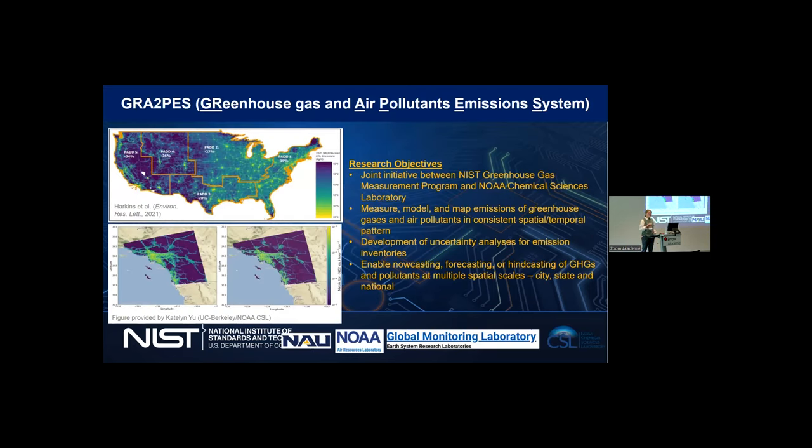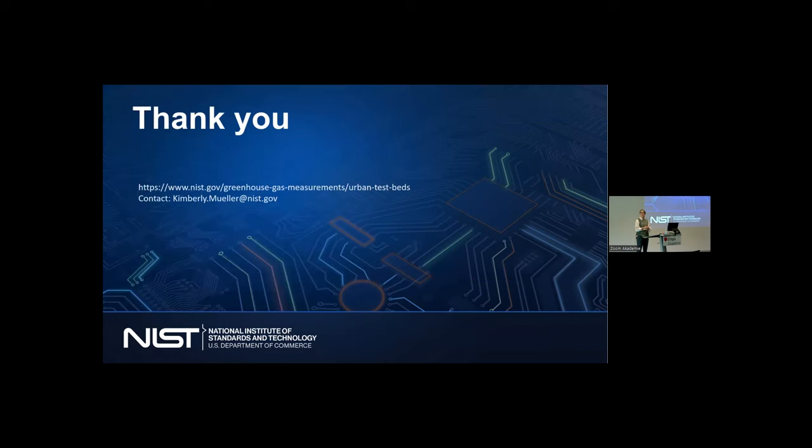Finally, my last slide. Knowing that people need actual information, this is partnered with NOAA and various labs along with Kevin Gurney at NAU to help basically create, measure, model and map emissions of greenhouse gas and air pollution. We're really combining the whole system here because the mechanisms that create greenhouse gases also create air pollution. In a consistent spatial and temporal way, and also developing uncertainty analysis. In the end, we hope we can do things like now casting, forecasting, hindcasting of greenhouse gas and air pollutants at multiple spatial scales to ensure consistency across city, state and national scales.